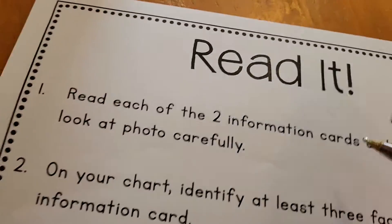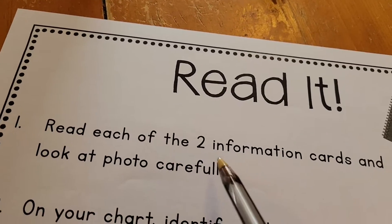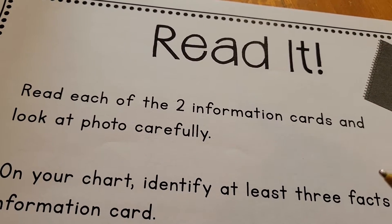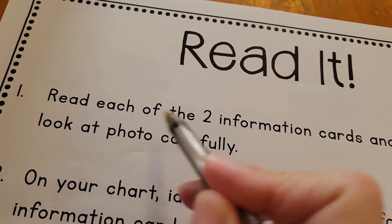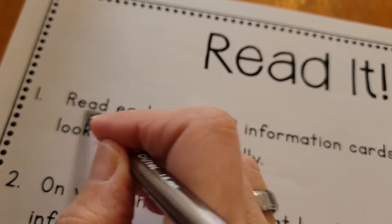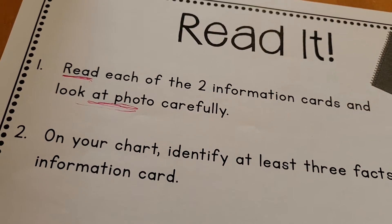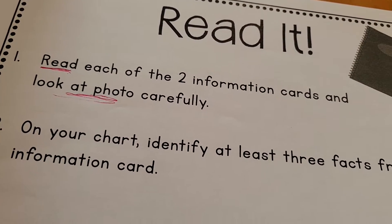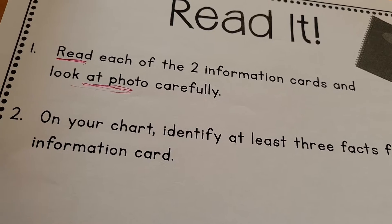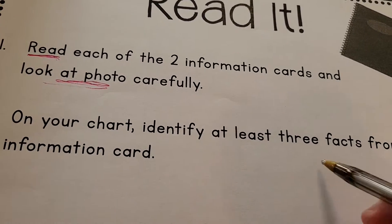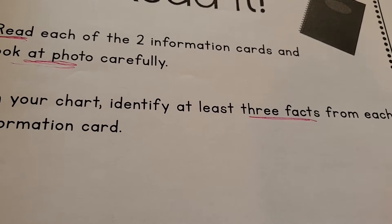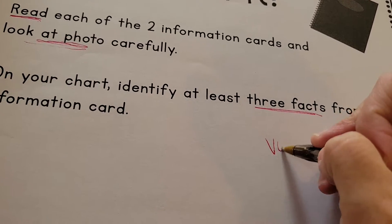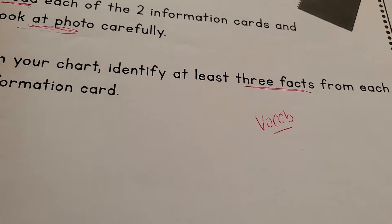The first part, which you're going to do today, is this read it. There are two different information cards or reading passages. You're going to read through those and look at the photo that goes along with each one. Then on the following charts — there are two charts — on one side you're going to write three facts that you get from the information cards, and on the other one you're going to write vocabulary.